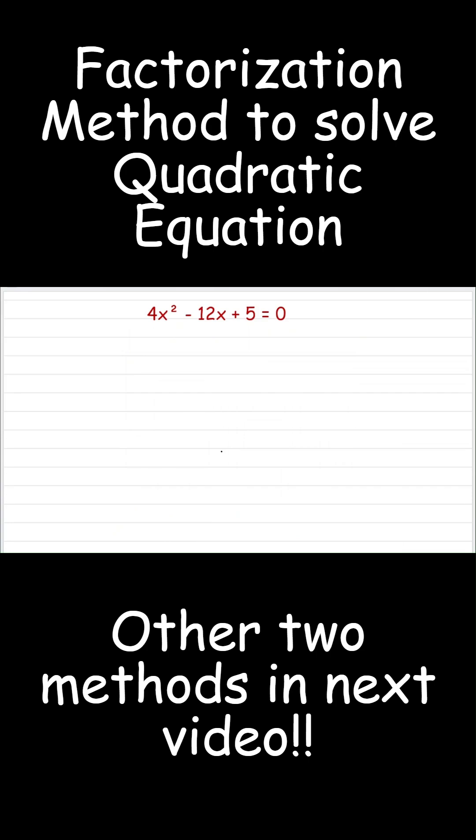So our equation is 4x squared minus 12x plus 5 equals 0. On this slide, I am going to use the factorization method. Now, if I compare this given equation with the standard form of the quadratic equation ax squared plus bx plus c equals 0, the value of a is 4.